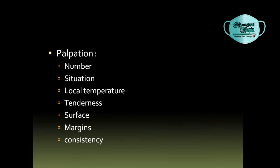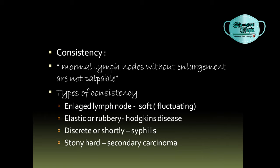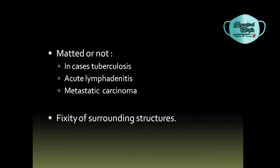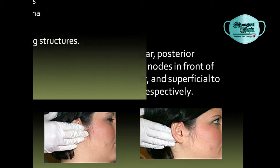The skin over the lymph nodes is checked, and palpation is done for number, situation, local temperature, tenderness, surface, margins, and consistency. Normal lymph nodes without enlargement are not palpable. Enlarged lymph nodes may show soft fluctuating consistency; elastic or rubbery consistency is present in Hodgkin's disease; discrete lymph nodes are present in syphilis; and stony hard lymph nodes are present in secondary carcinoma. Lymph nodes should be checked if they are matted — matted lymph nodes are present in tuberculosis, acute lymphadenitis, and metastatic carcinoma. Fixity of surrounding structures to skin or bone is indicative and suggestive of carcinoma.